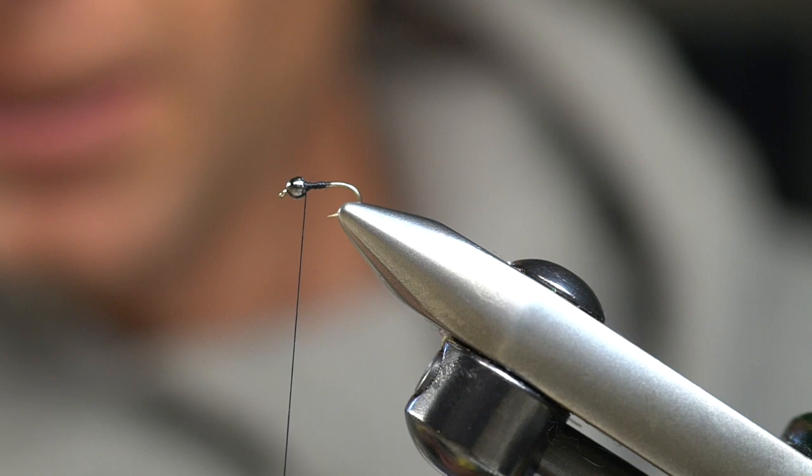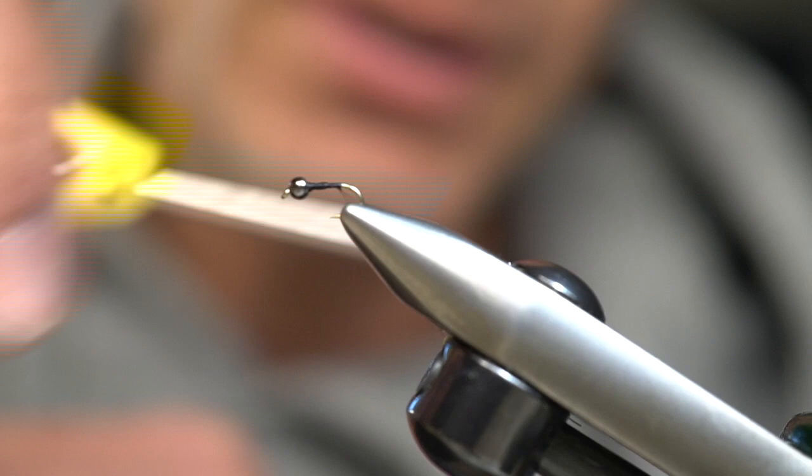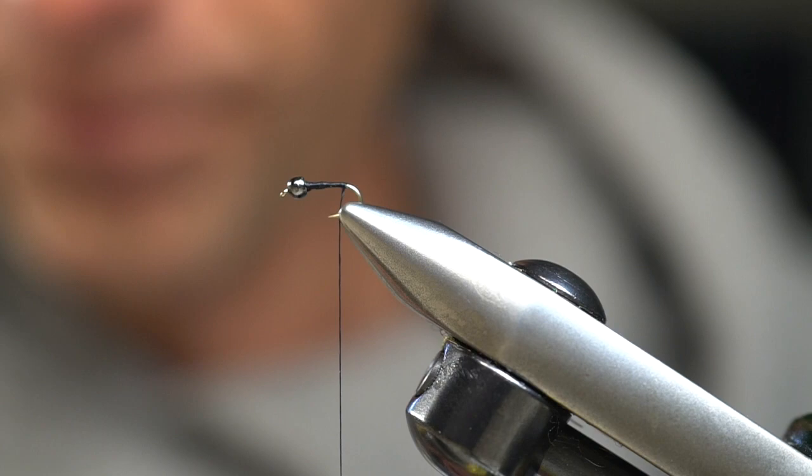To get started we're going to use a 6/0 tying thread. Just make enough wraps behind that bead to eliminate that bead from sliding back. Once we've accomplished that, just take our thread, we're going to wrap back and let the thread hang approximately above the barb.